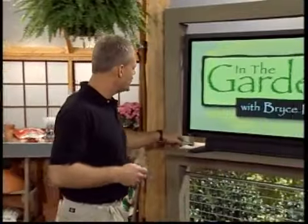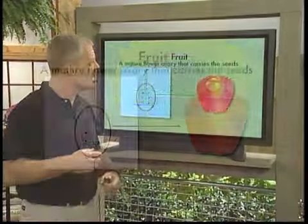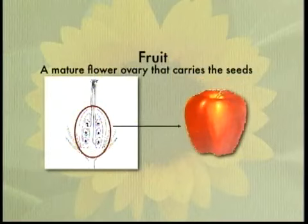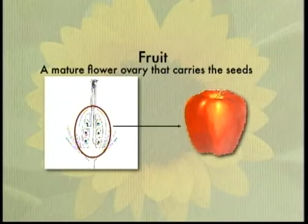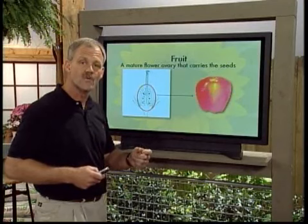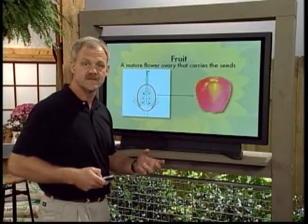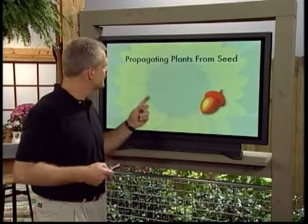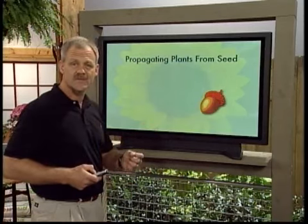I've put a diagram on the board of a mature flower ovary. The flower pistil — most of its parts dissipate once fertilization has occurred, except for the ovary. The ovary is what becomes what we know as the fruit. A fruit is a mature flower ovary that houses the seeds.